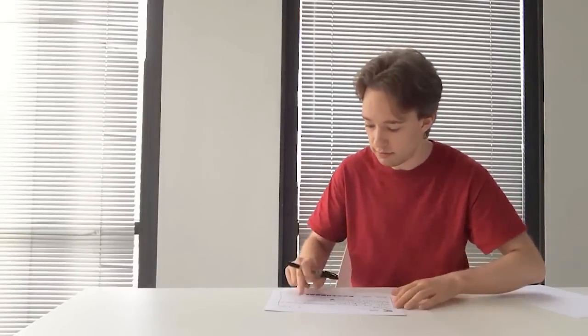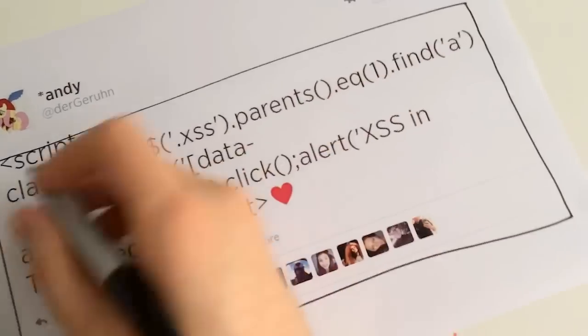This bit here. Find the second item in that ordered list. Computers count from zero, so one will be the second. Zero, one. Okay. Second item in that list. This block, just here. Okay. Next bit.